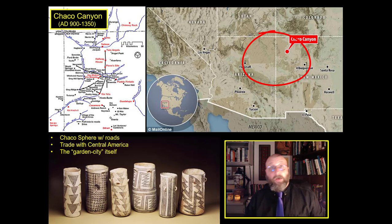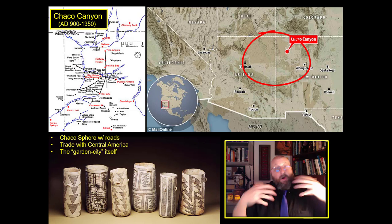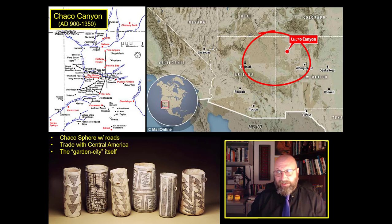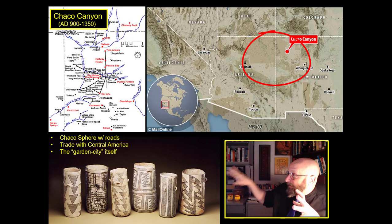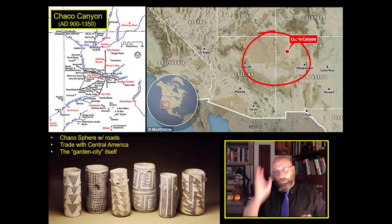We have more than just chocolate pots connecting Chaco Canyon to Central America. There are macaw bones, there's the presence of turquoise down in southern Mexico — which might be from Mexico, or might also be from New Mexico, from the Four Corners region. Clearly, Chaco Canyon is in contact with these southern areas, maybe following the very famous Chaco Meridian. As you walk directly south, you'll end up in central Mexico.